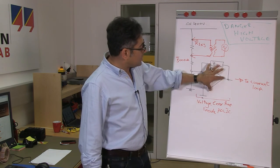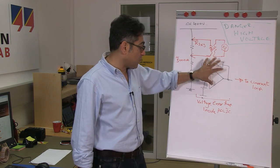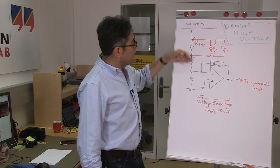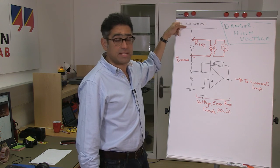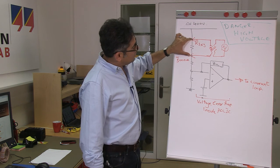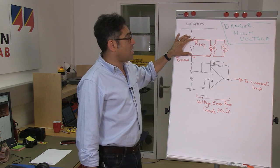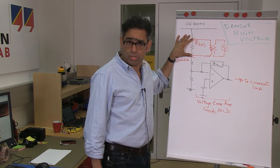So inside of your power factor correction IC you have got an error amplifier. This is the voltage error amplifier. And that is tied to the output of the PFC stage which is, as I said, around 400 volts. So we put an injection resistor right up here and then we use the Bode 100 in order to inject a signal. And then we measure the voltage loop.